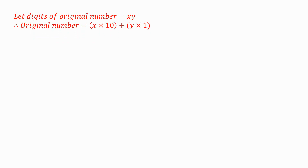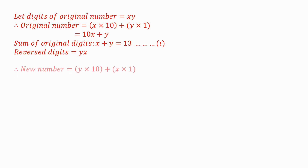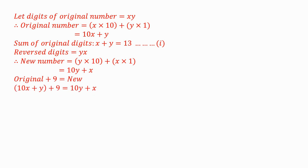The original number is X times 10 and Y times 1, since the place value of X is tens and the place value of Y is ones. So the original number is 10X plus Y. We've been told the sum of the digits is 13, therefore X plus Y equals 13 — Equation 1. When the digits are interchanged we have YX, so the reversed number is 10Y plus X. We've been told the original number is increased by 9, so the original plus 9 equals the new number.